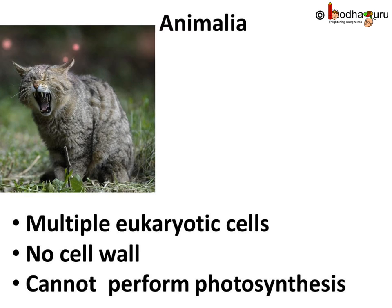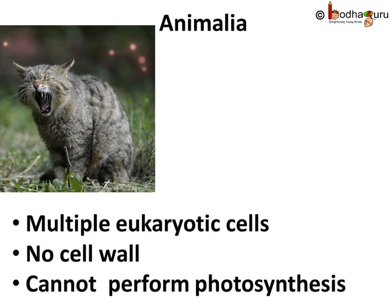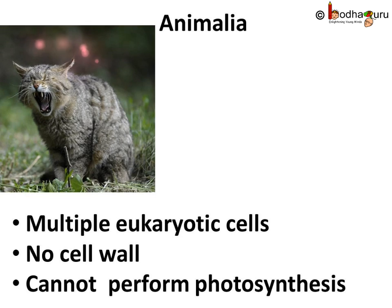And the last kingdom, the fifth one, is kingdom Animalia. These are multicellular eukaryotes who don't have a cell wall. They are heterotrophs, meaning they cannot make their own food like the green plants. All animals, including human beings, fall into this group.